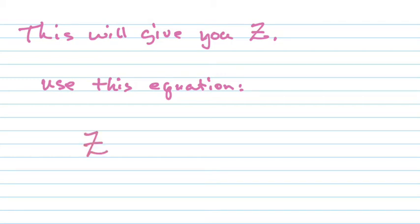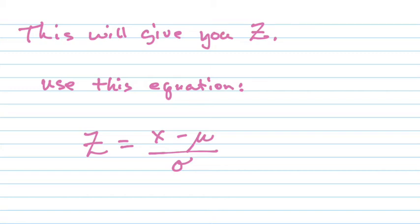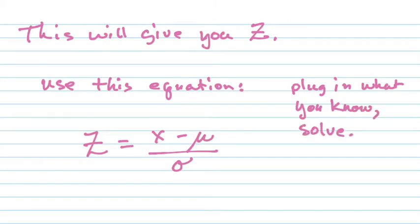Here's the equation: Z equals X minus mu, over the standard deviation. You'll find Z from your calculator — that's what the calculator tells you. Then just plug in what you know and solve for the unknown. You can solve it by hand — it's an easy equation — or you can use the solver on your calculator. I'll show you both ways.